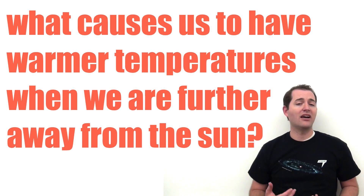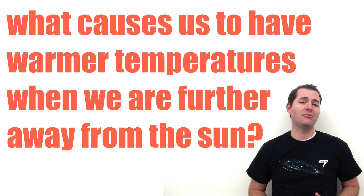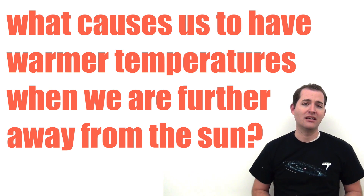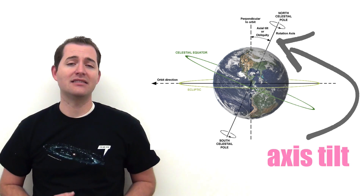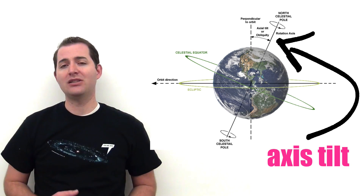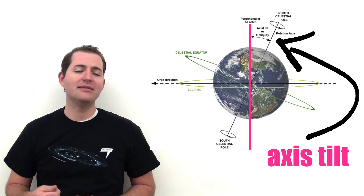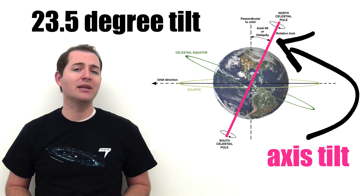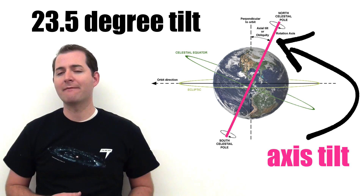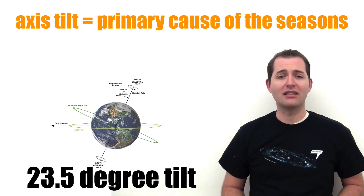So what causes us to have warmer temperatures when we're further away from the Sun and colder temperatures when we're closer? The major cause of the seasons is the axis tilt of the Earth as compared to its orbital plane. Instead of the Earth's rotational axis being straight up and down, it is actually tilted at an angle of about 23.5 degrees from the orbital plane, and it's this tilt that causes the variations in our seasons throughout the year.